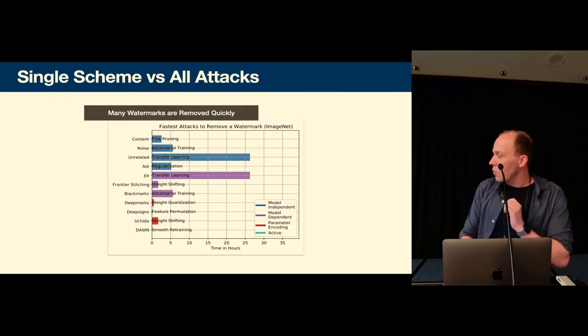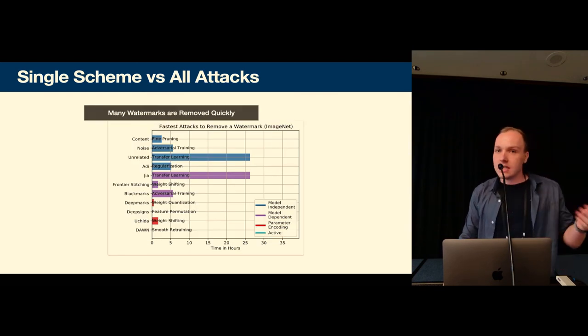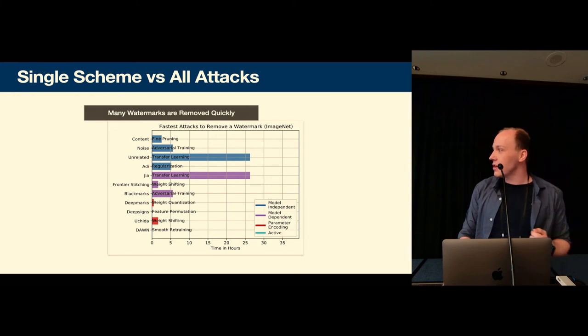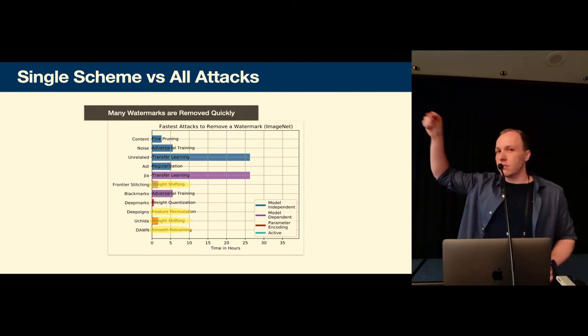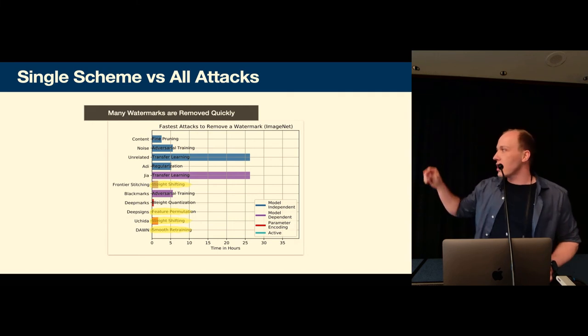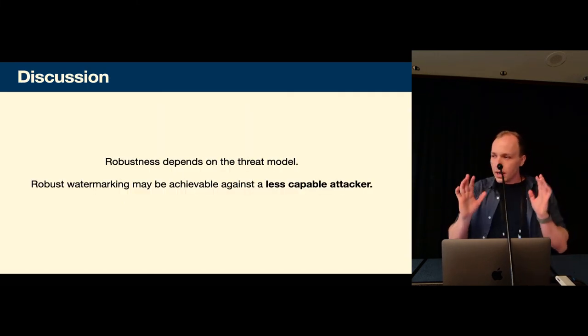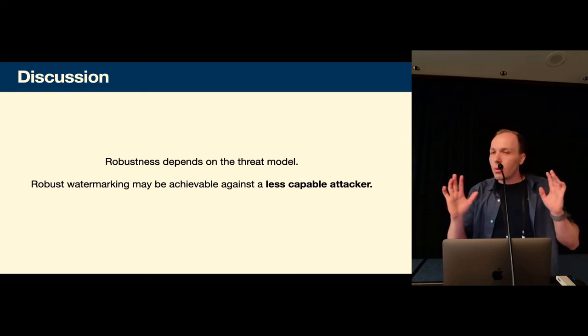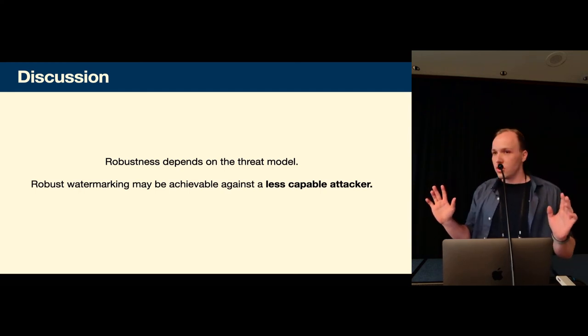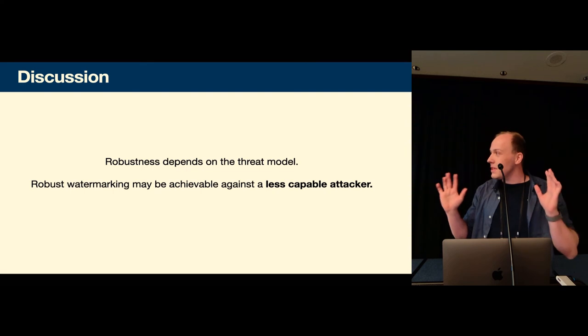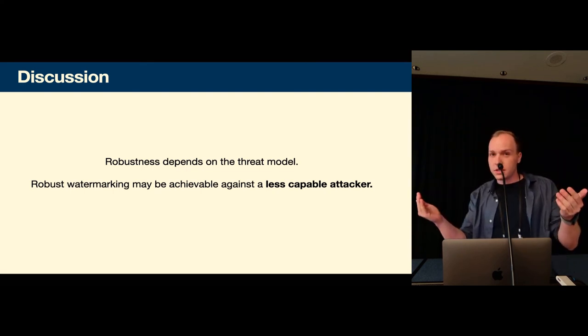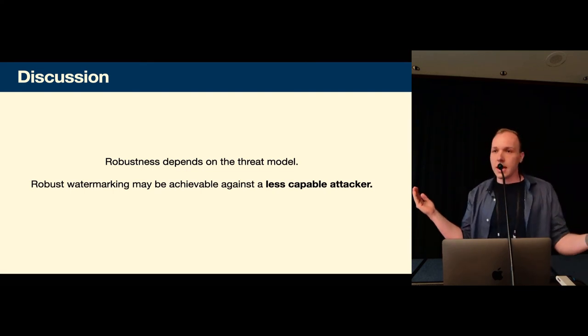So we also see that the attacker doesn't need to spend a lot of run time to remove these attacks especially our adaptive attacks are really fast at removing the watermark and there's only two schemes where the only attacks that remove the watermark are model extraction attacks namely transfer learning attacks. So as a takeaway robustness is very hard to achieve and it might be impossible to achieve robustness of watermarking against this highly capable attacker. So for robustness it's crucial that we define the capabilities of the attacker very accurately.